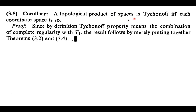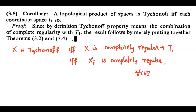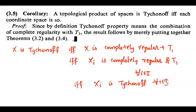Corollary: A topological product of spaces is Tychonoff if and only if each coordinate space is Tychonoff. We know that X is completely regular if and only if each coordinate space Xi is completely regular, and by another previous theorem, the product space X is T1 if and only if each coordinate space Xi is T1. By the definition of Tychonoff spaces, Xi is completely regular and T1 if and only if Xi is Tychonoff. Thus we have proved that the product space X is Tychonoff if and only if each coordinate space Xi is Tychonoff.